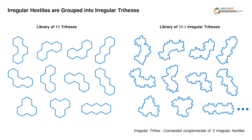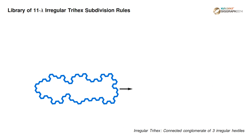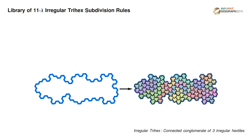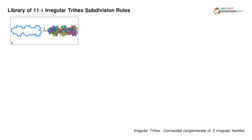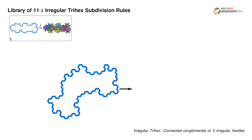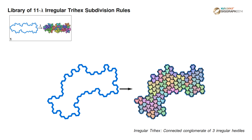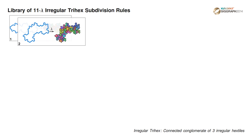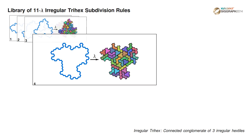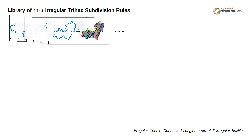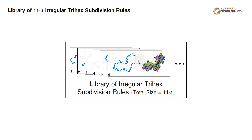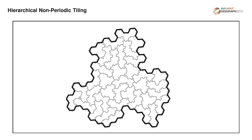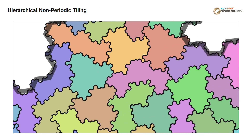Each regular trihex can be transformed into several irregular trihexes using the above stochastic process, which will greatly impact the spectral quality of the underlying sampling pattern. Now we can build a finite set of subdivision rules using these irregular trihexes. As before, each irregular trihex will be subdivided into lambda subtiles, forming a library of finite subdivision rules. By applying this set of deterministic subdivision rules, we achieve our goal of creating a non-periodic hierarchical tiling.